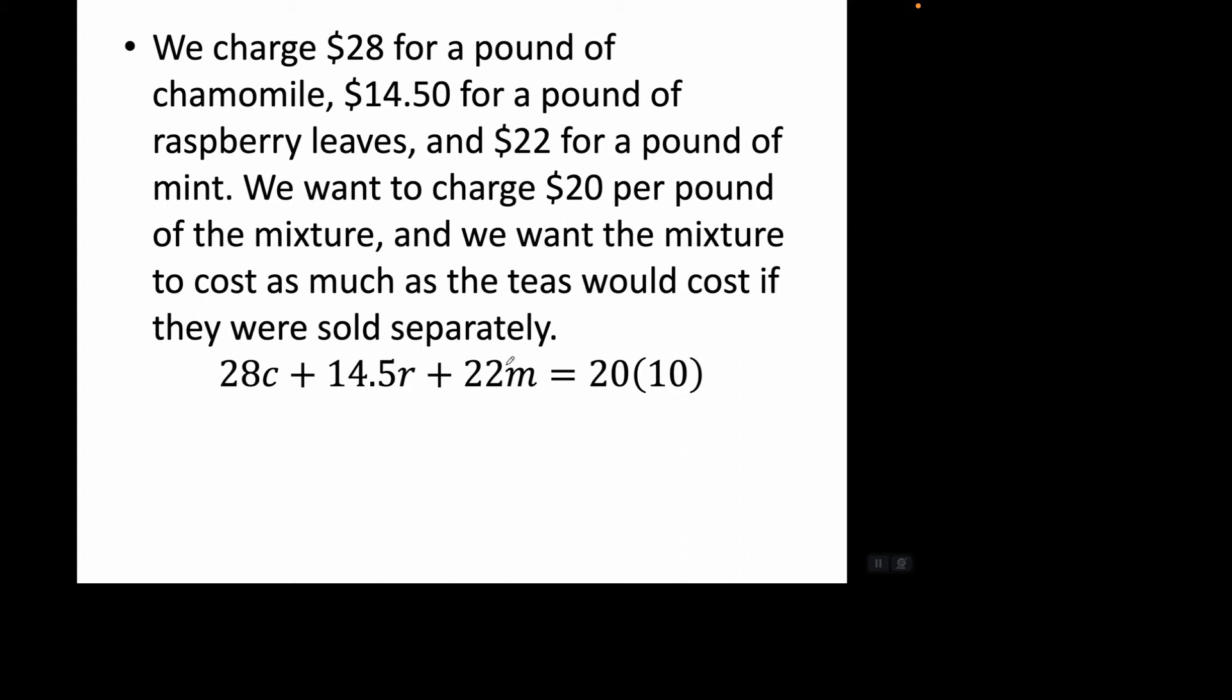This is the cost of the teas if they are sold separately. We have C pounds of chamomile selling for $28 a pound, so we charge 28C for the chamomile in the mixture. In the same way, 14.5R for the raspberry in the mixture, and 22M for the mint in the mixture.